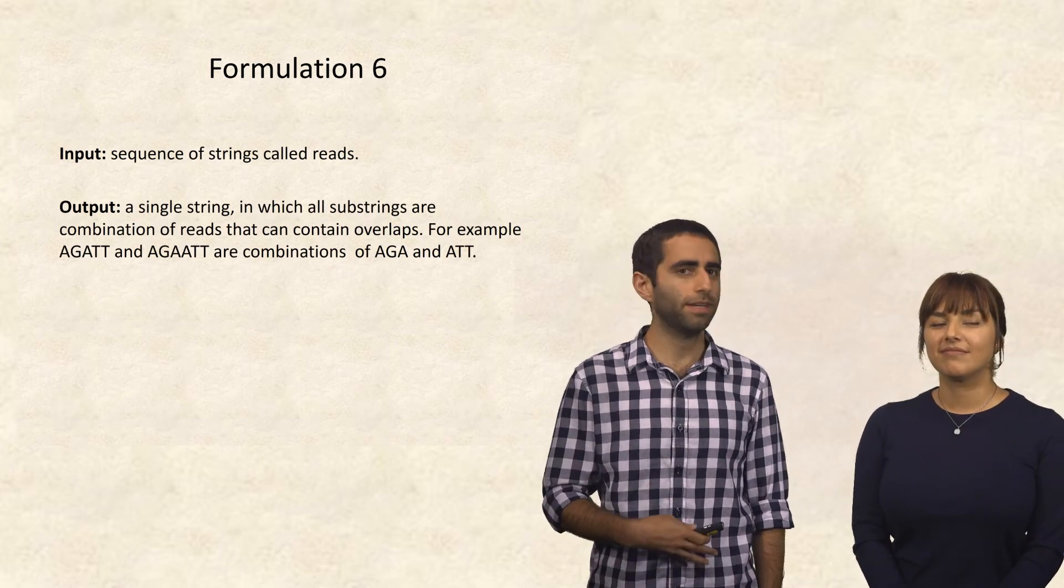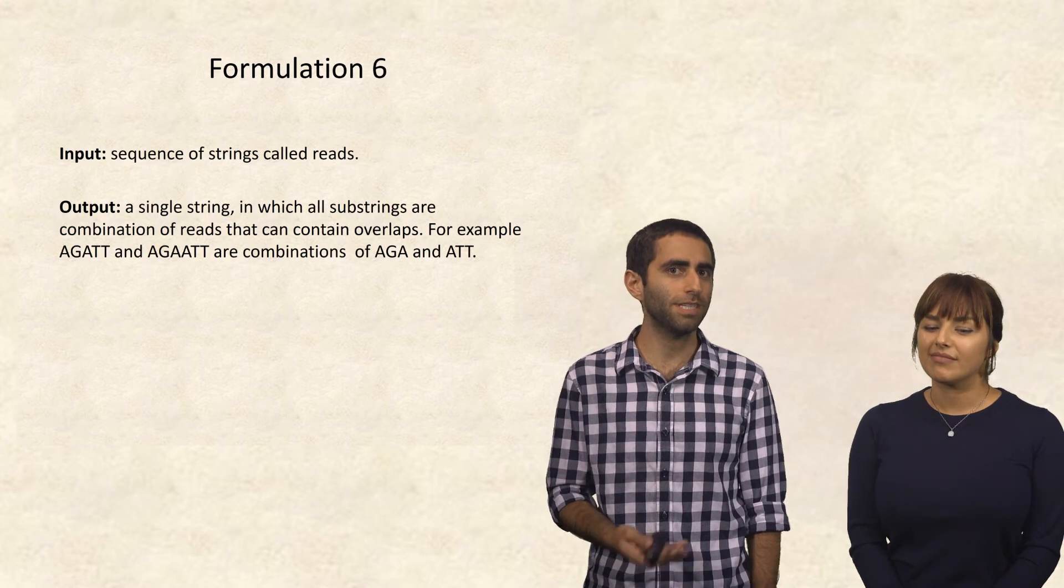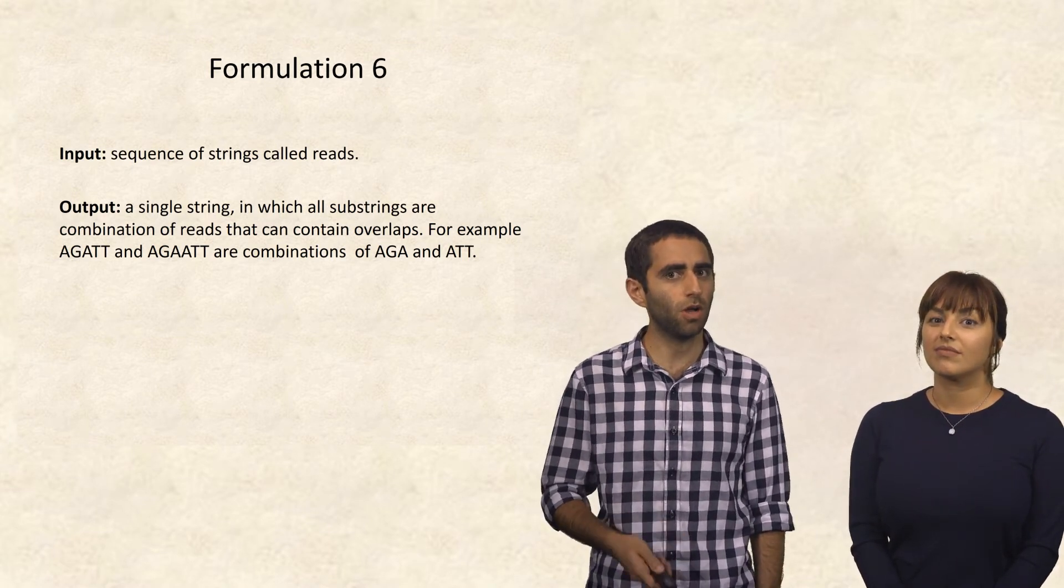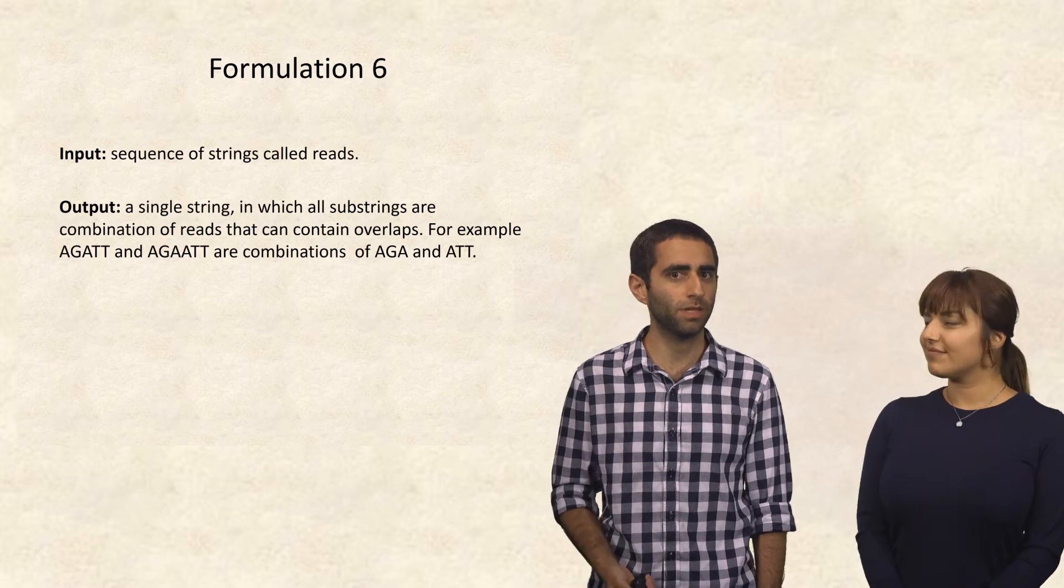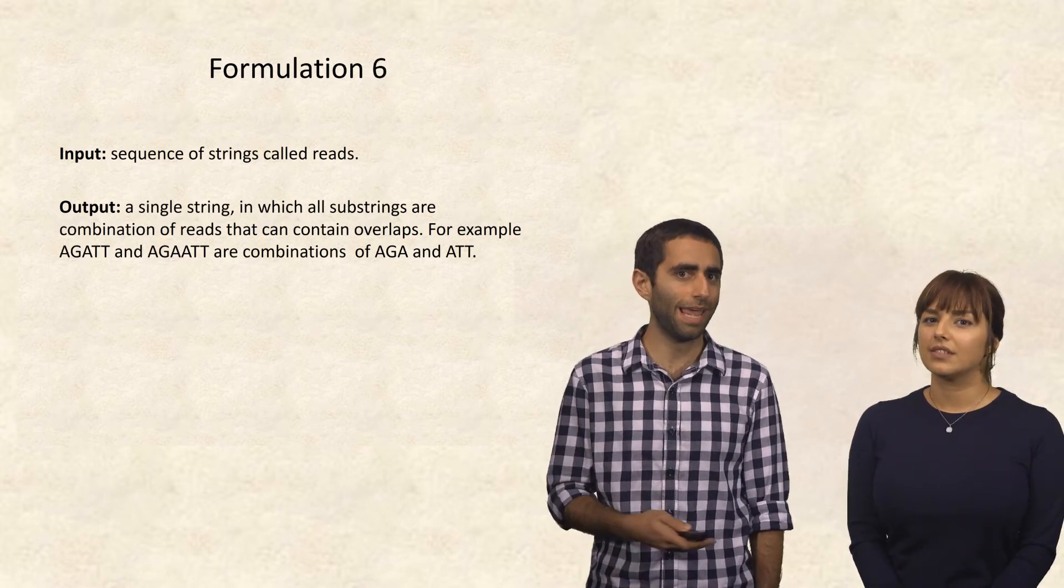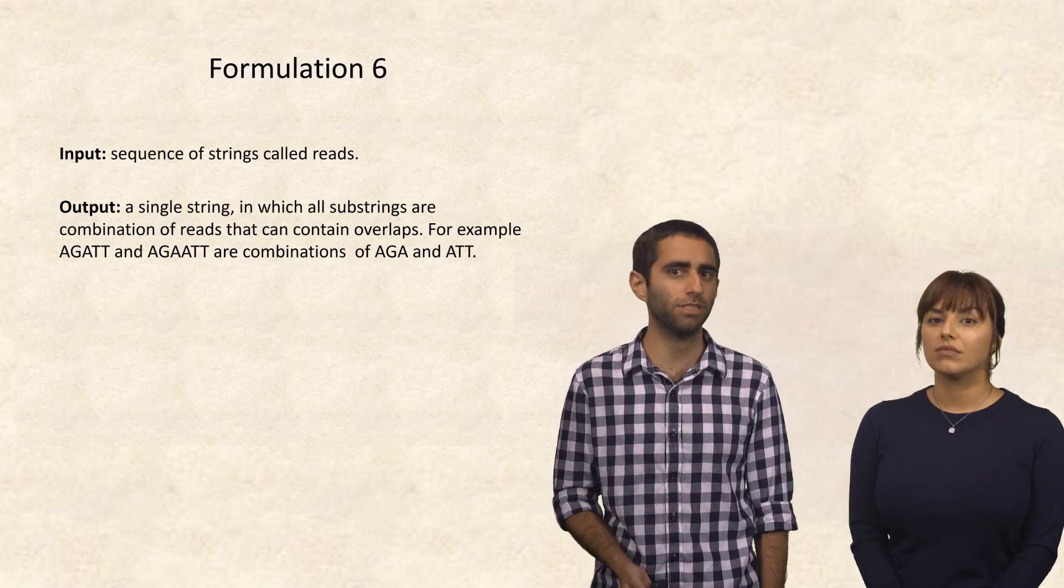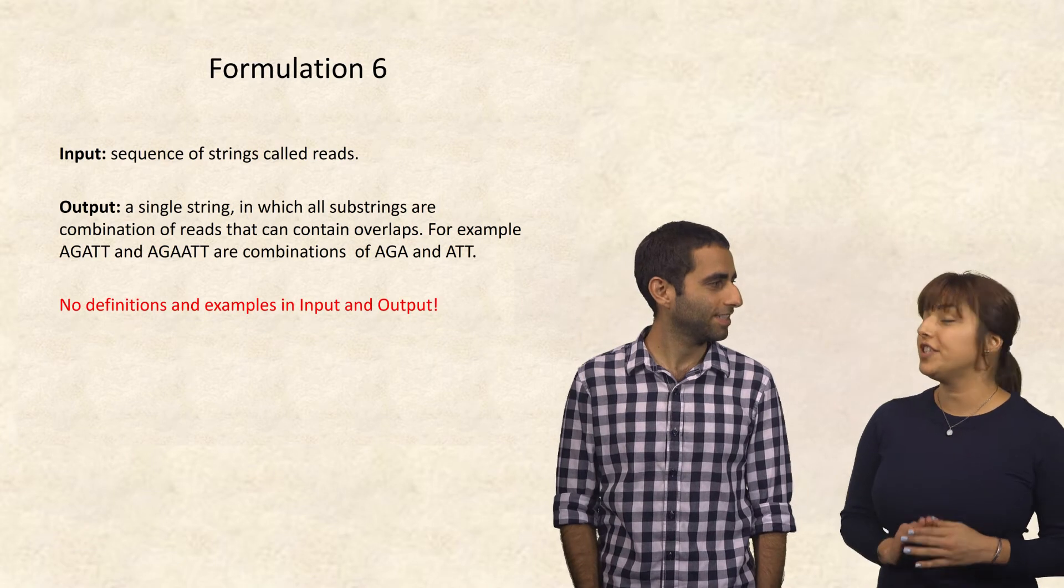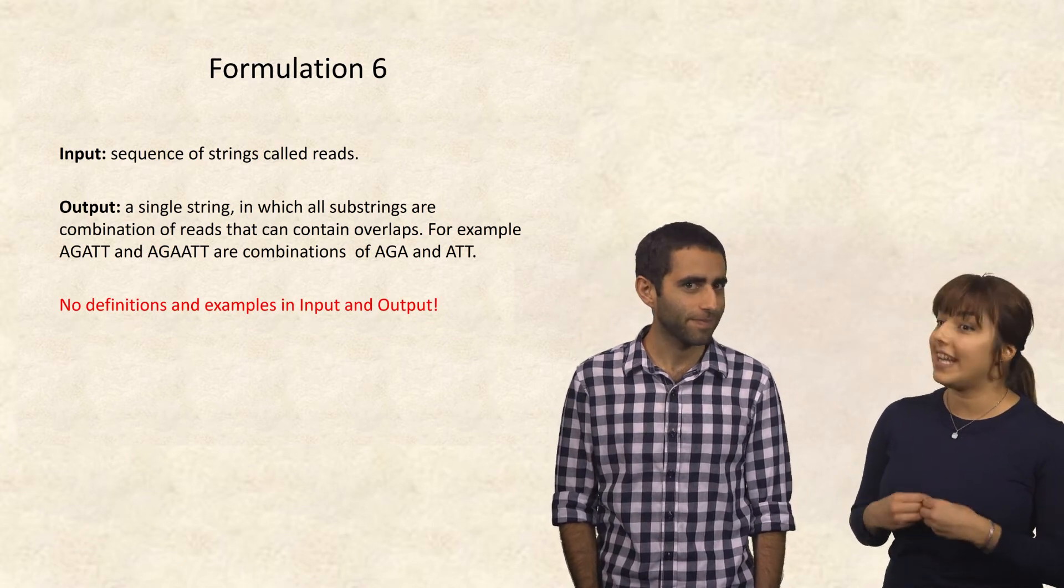So maybe then instead I'll say that the input is a sequence of strings called reads, and the output is a single string in which all substrings are a combination of reads that contain overlaps. For example, agatt and agaatt are combinations of aga and att. Nima, no definitions and examples in the input and output.